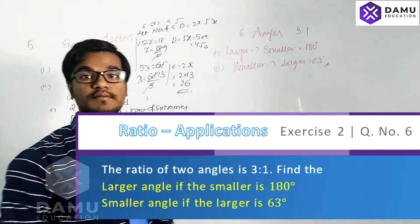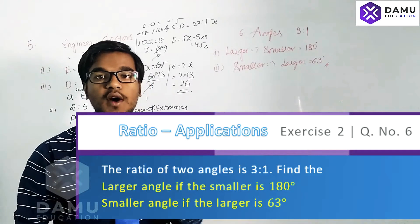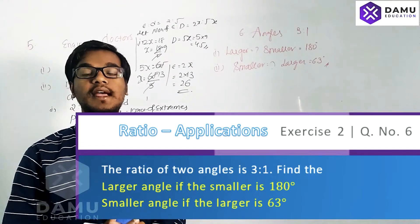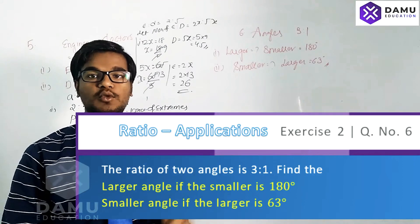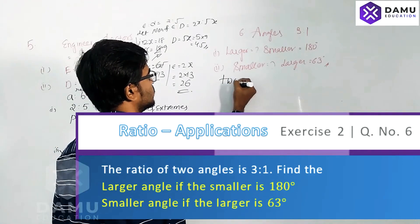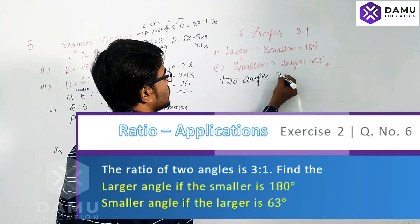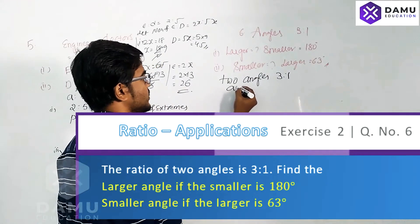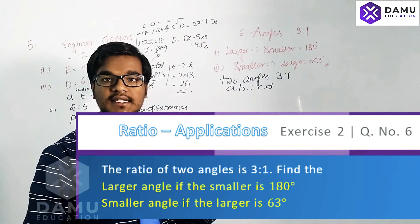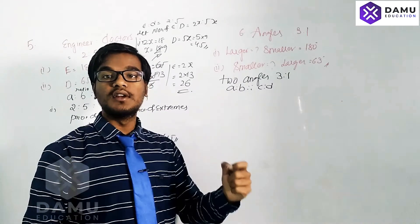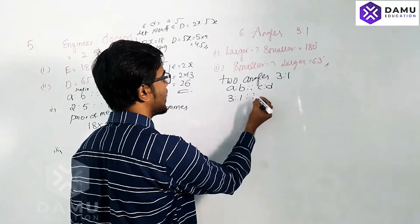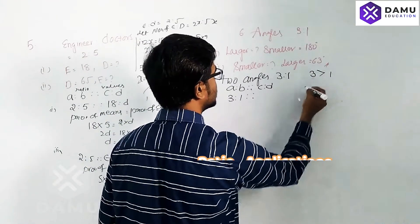Next, two angles are given in the ratio 3 is to 1. I will use two methods: the proportionate method and the normal method. Using the proportionate method: 3 is to 1, so A is to B as C is to D. On the left side we take the ratio, and the right side we take the actual values. Since 3 is greater than 1, the larger angle comes first.